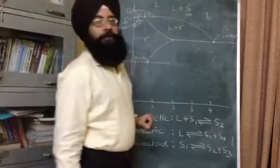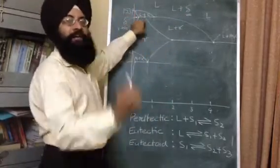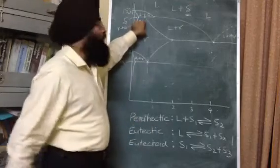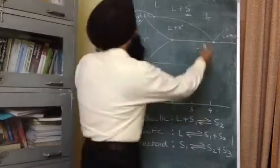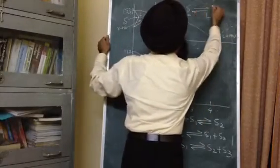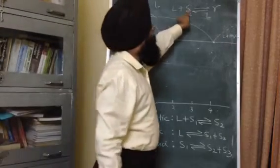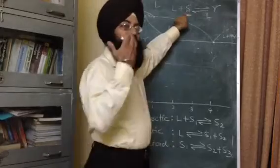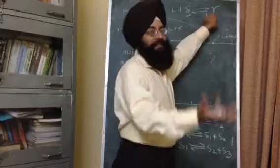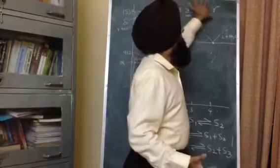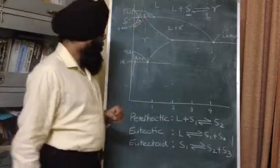Above the peritectic point you have liquid plus delta, where delta can be compared to solid 1. Just below this point — when you cool this particular alloy of peritectic composition — the phase changes to the gamma phase. The gamma phase is the austenite phase, which is the FCC structure. So in this peritectic reaction we encounter two different solids: delta ferrite and gamma austenite. This is the peritectic reaction that takes place in the iron-carbon diagram.